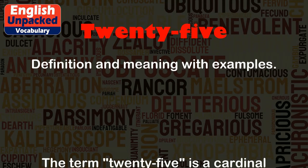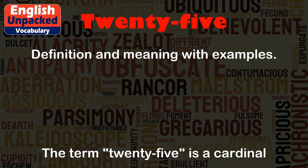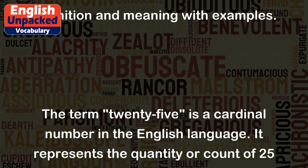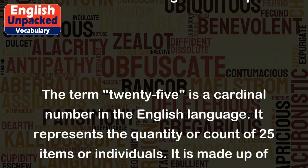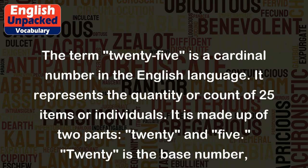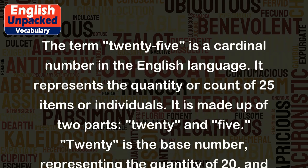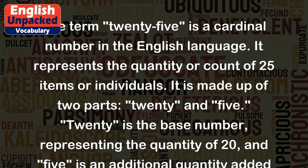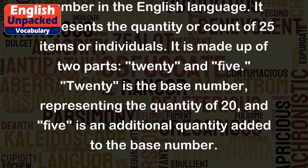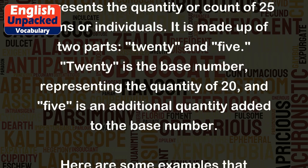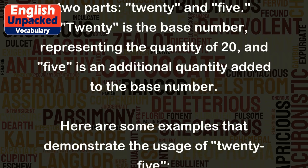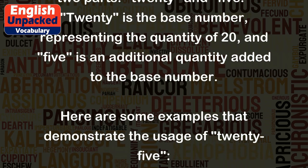25. The term 25 is a cardinal number in the English language. It represents the quantity or count of 25 items or individuals. It is made up of two parts: 20 and 5. 20 is the base number, representing the quantity of 20, and 5 is an additional quantity added to the base number.